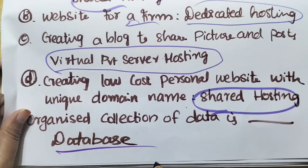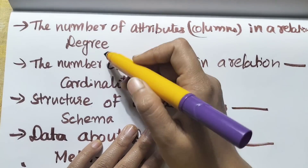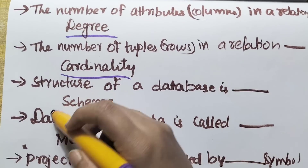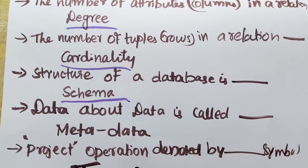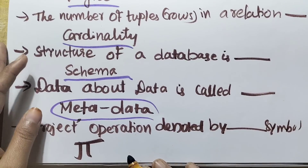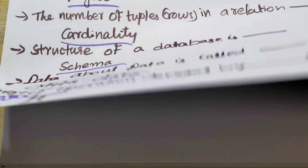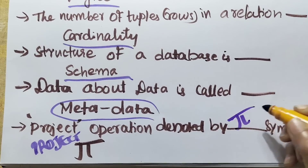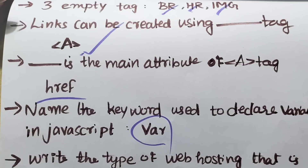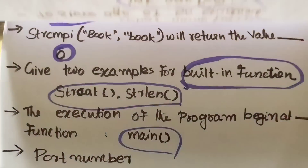An organized collection of data is called a database. The number of attributes or columns in a relation is called degree. The number of tuples or rows is called cardinality. The structure of a database is called schema. Data about data is called metadata. Project operation is denoted by pi (π).